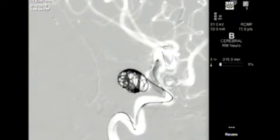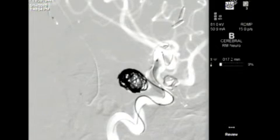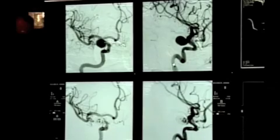Here you can see a second platinum coil coming through the microcatheter and being delivered into the aneurysm. There is still some residual filling within the aneurysm.